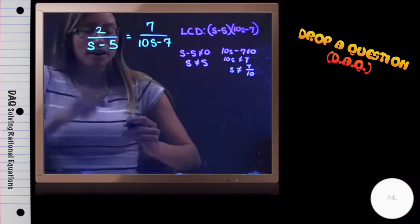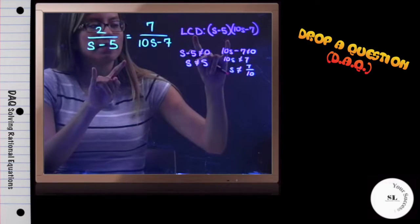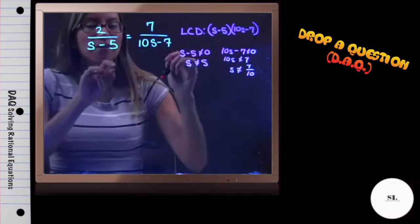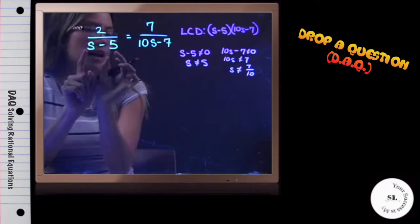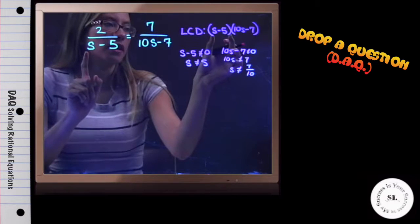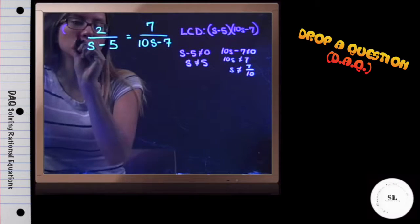Now that I have that, I can actually see my LCD and compare it to the rational equation I have. For this first rational expression, I have s minus 5 here, but it is missing 10s minus 7. I am going to multiply that to the numerator and denominator.